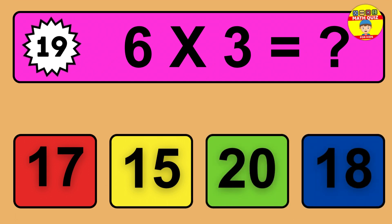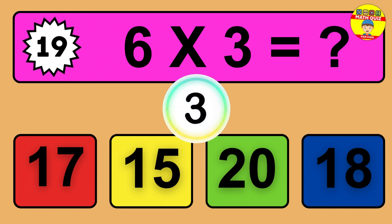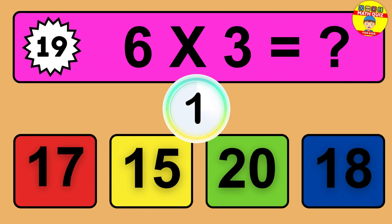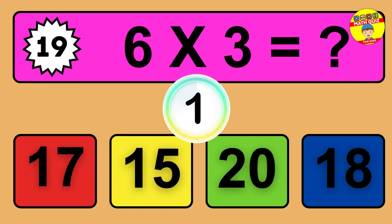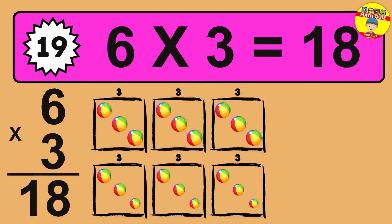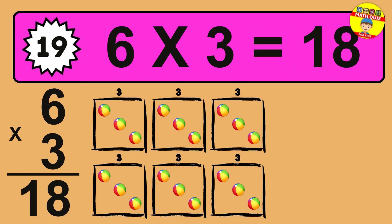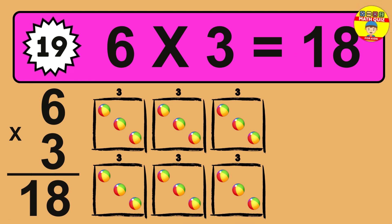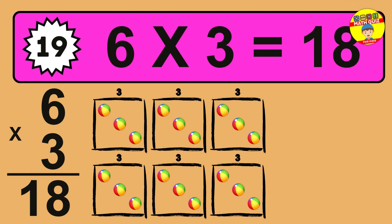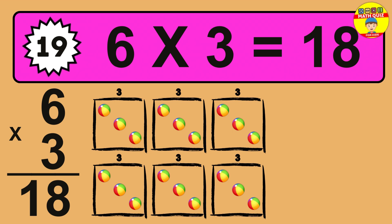Question 19. 6 times 3 equals what? The answer is 6 times 3 is 18. To calculate, we have 6 groups with 3 balls each one. So how many balls do we have? 18 balls.